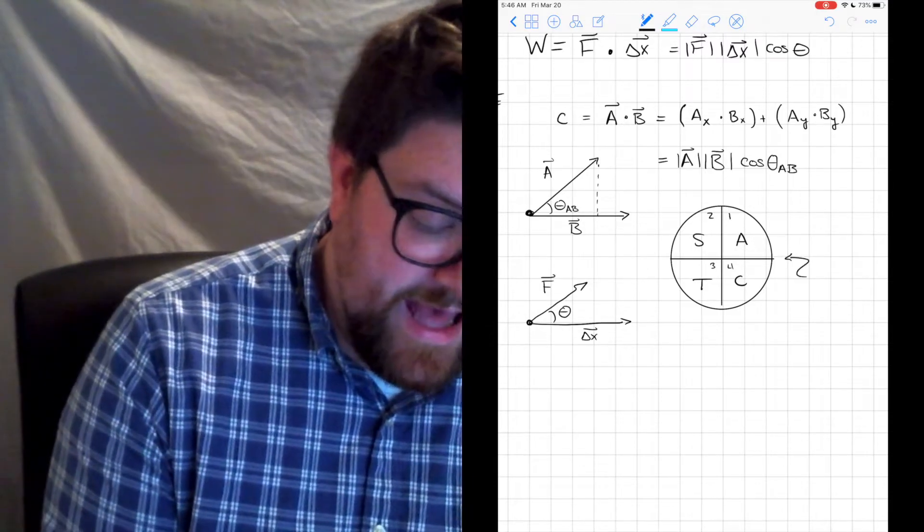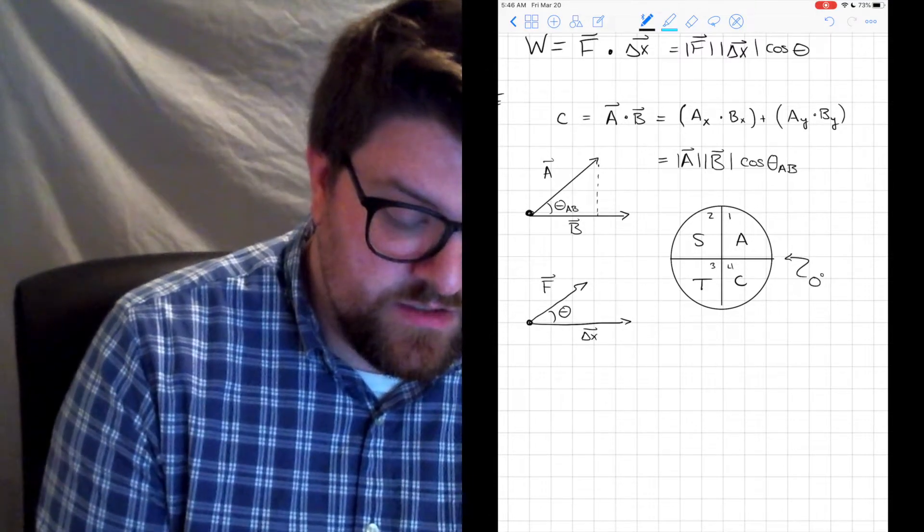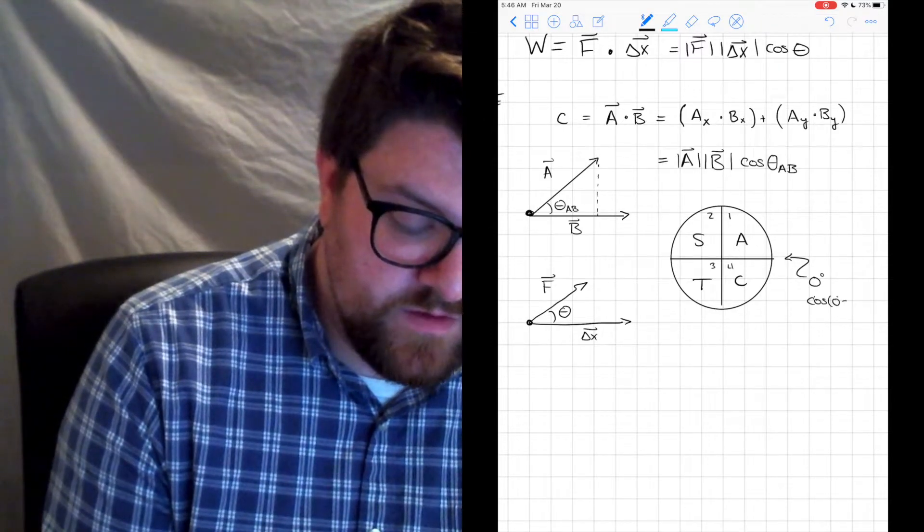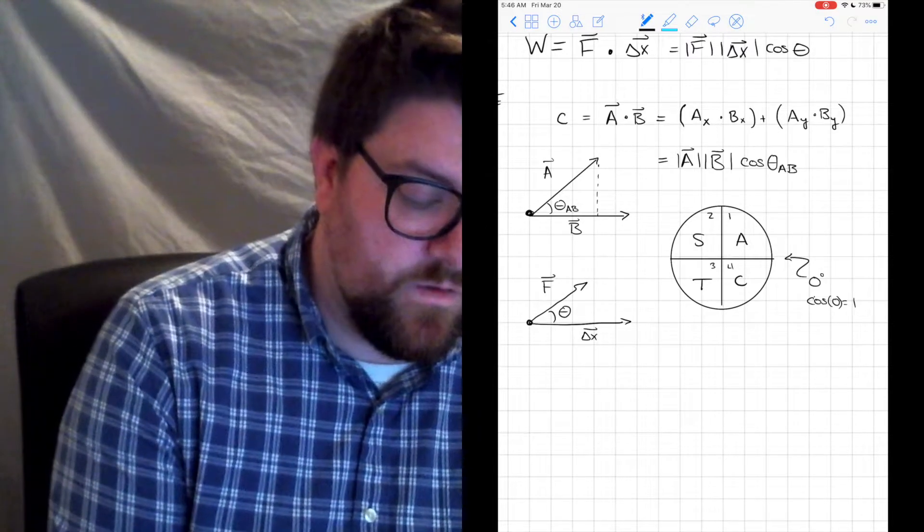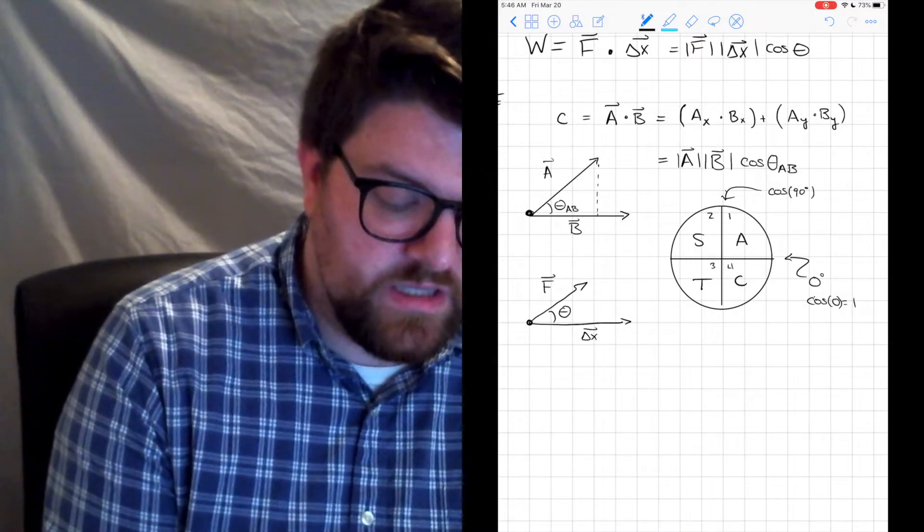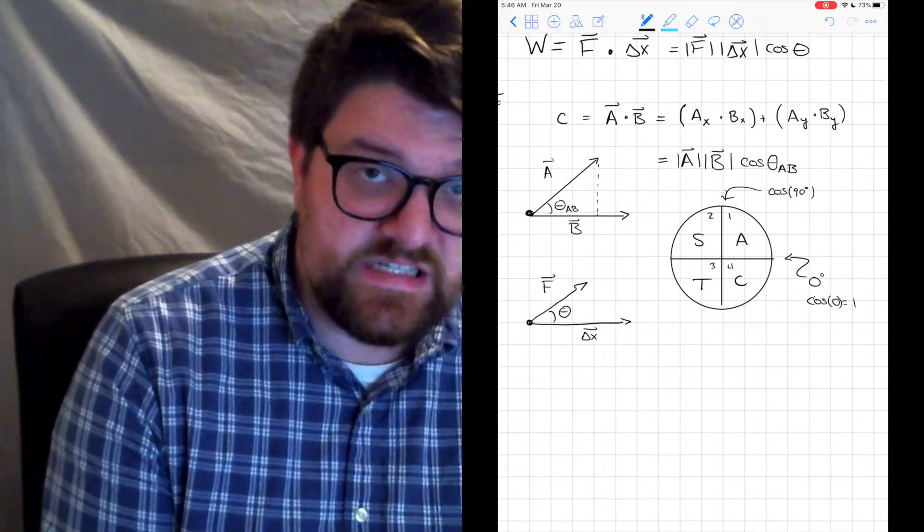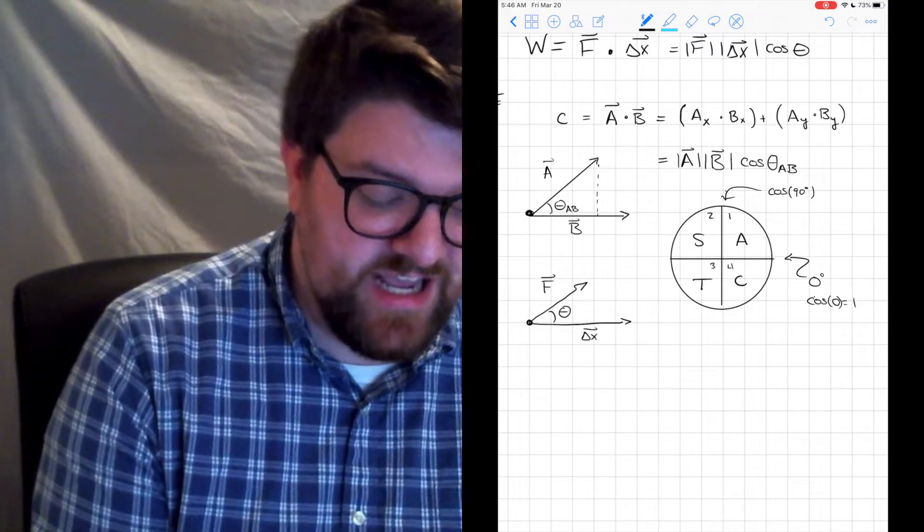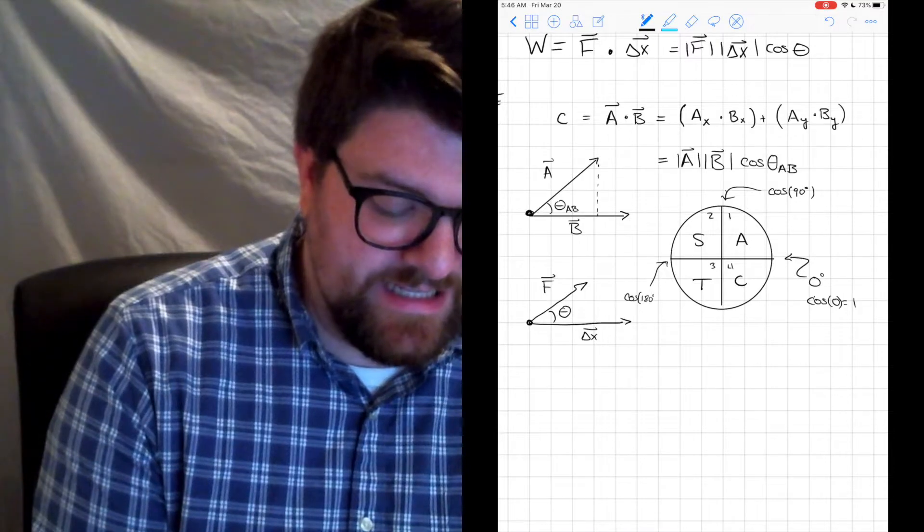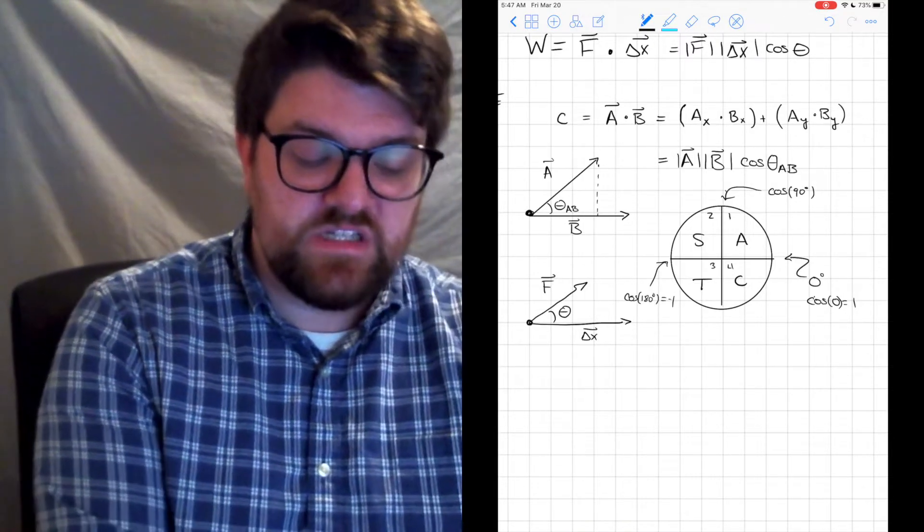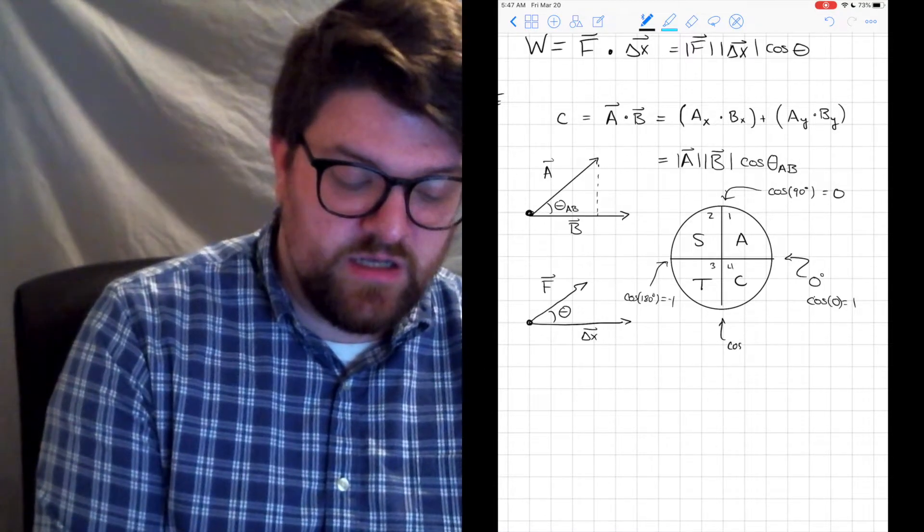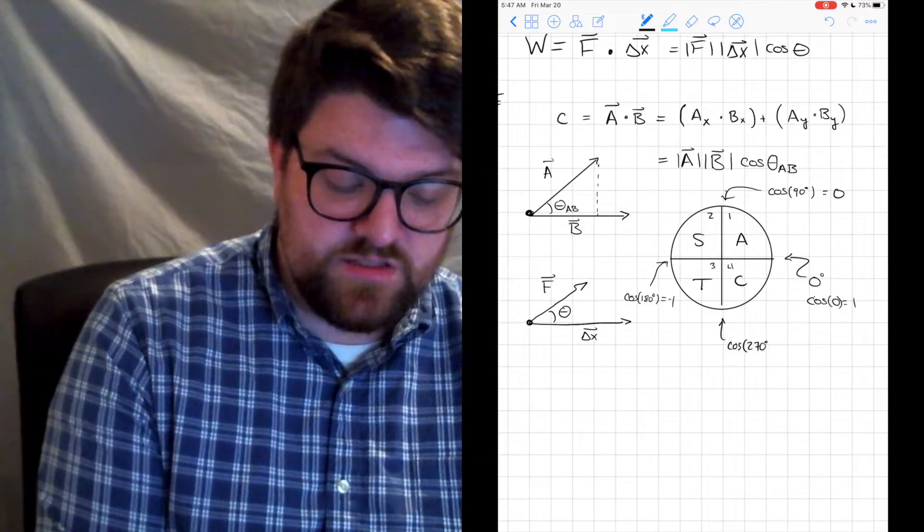So at zero degrees, right? Cosine is equal to one. Zero equals one. If I think about cosine of 90 degrees, right? Well, I'm one here. I'm going to go back to our symmetry rules. I should be negative one. Here, maybe that's a better way of doing it. Cosine of 180 is going to be negative one. So then cosine of 90 is zero. And cosine of 270 is also zero.